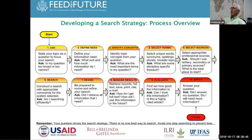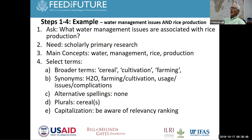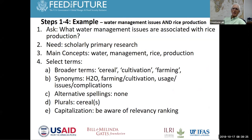We'll quickly go over a couple of strategies. For the example of water management issues and rice production, the question is: what water management issues are associated with rice production? The type of literature needed is scholarly primary research. The main concepts are water management, rice, and production. Broader terms include cereal cultivation and farming; synonyms include H2O, cultivation, usage, and alternate spellings. That covers the first four steps of the search process.